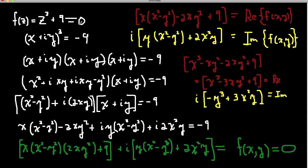So I have z cubed plus 9 equals 0. I'm going to bring the 9 over to the other side of the equation just to get it out of the way for now. So I have z = x + iy, and x plus iy cubed is equal to negative 9. x plus iy cubed is x plus iy multiplied by itself three times, so here's what we have: x plus iy times x plus iy times x plus iy, all equal to negative 9.